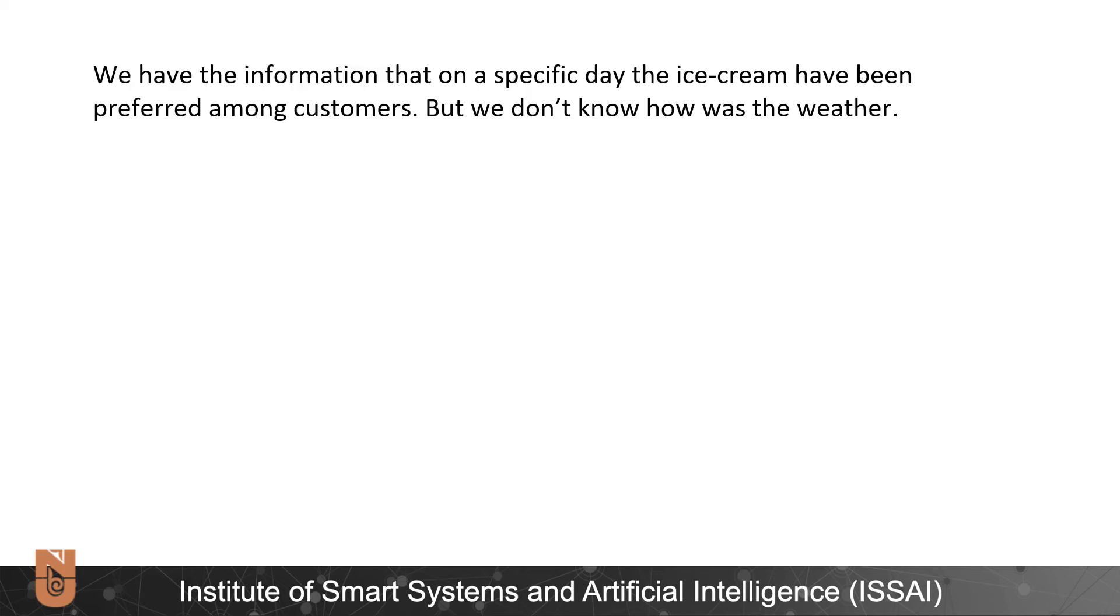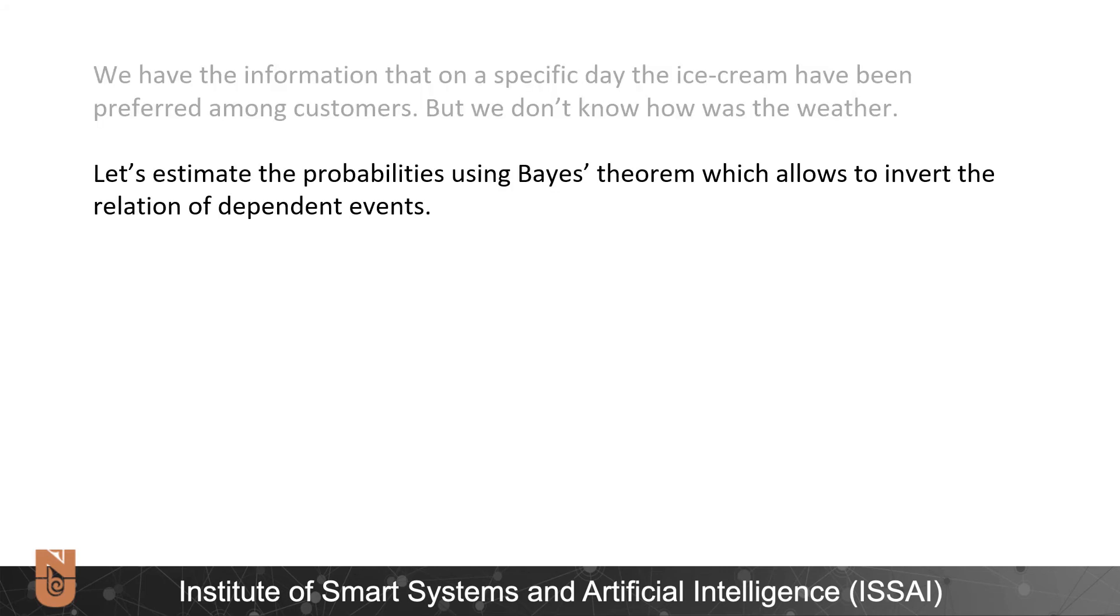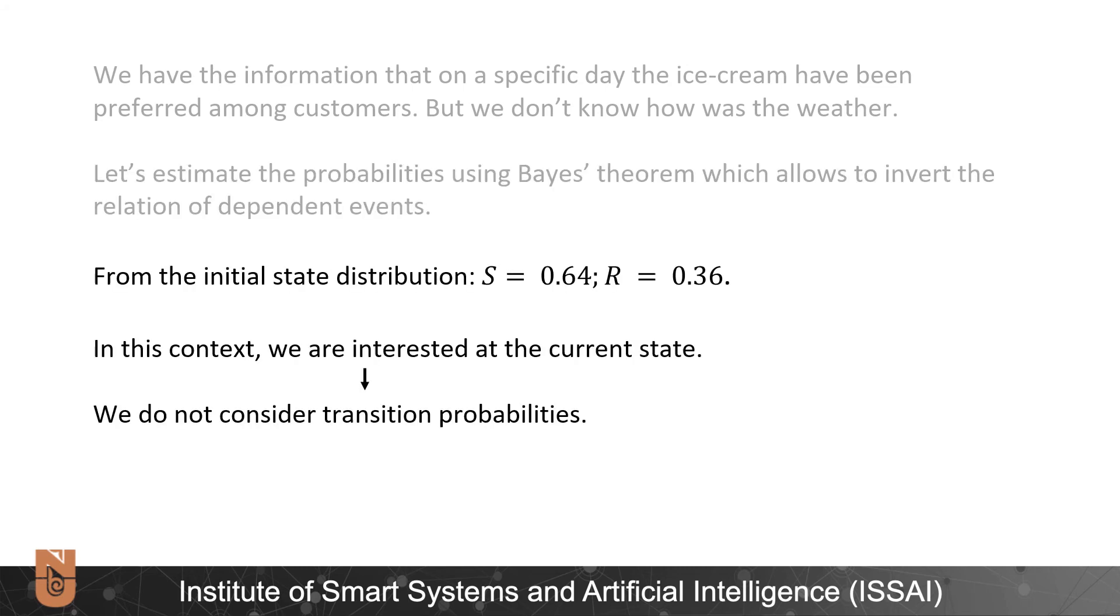We have information that on a specific day ice cream have been preferred among customers but we don't know what was the weather. Now using Bayes' theorem and inverting the relations of dependent events we can estimate the probability of sunny day or rainy day given that ice cream was mostly sold. From initial state distribution we had probability of sunny day 0.64 and rainy day 0.36. Because we're interested in current state we don't consider transition probabilities.